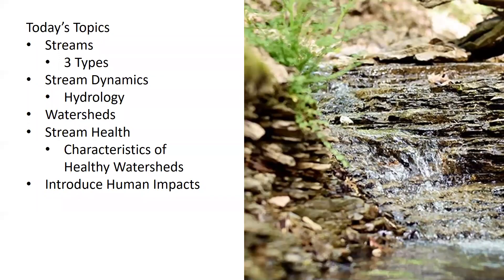This is the outline for what we'll be covering today. We'll start out talking about streams, including the types of streams and stream dynamics, or how streams move and change. Then we'll zoom out and talk about watersheds, because we have to look at the whole watershed to talk about stream health. We'll talk about things that make up healthy watersheds and touch on how humans have changed watersheds in preparation for the rest of our stream health and stormwater series.